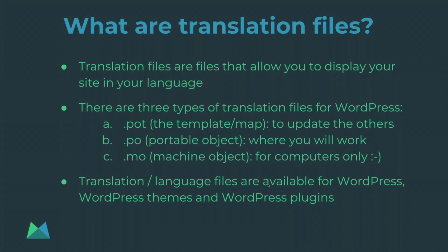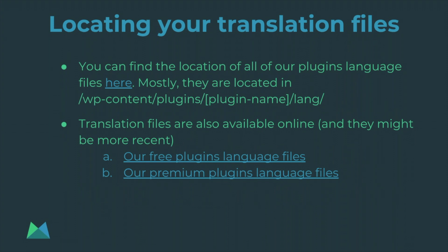These language files are available not only for the Events Calendar plugins but also for WordPress itself and for almost every WordPress theme out there, although there might be exceptions. Moving on, we'll look at where to locate your translation files. For the most part, they are located in wp-content/plugins/[plugin-name] — that could be The Events Calendar, the Filter Bar, or Event Tickets — and under that plugin name you will find a lang folder, which is short for languages.